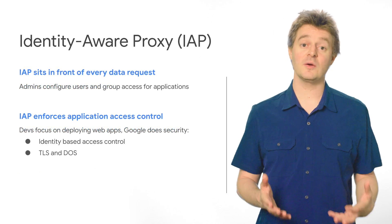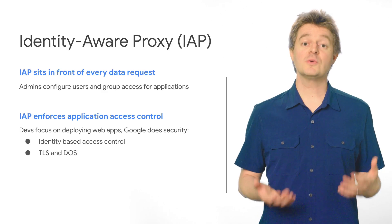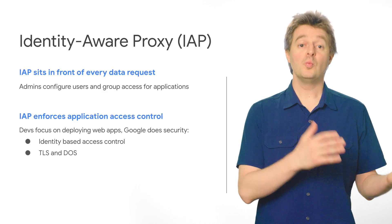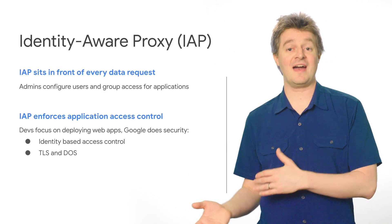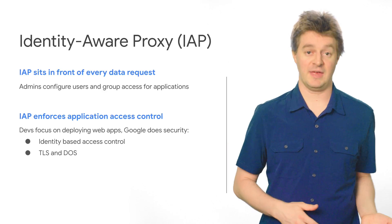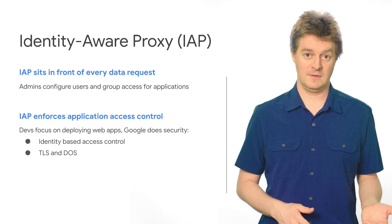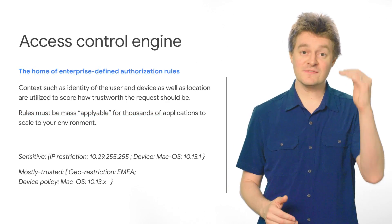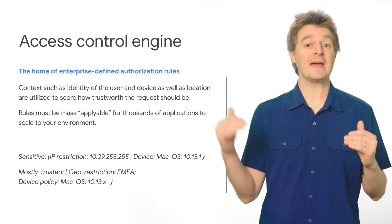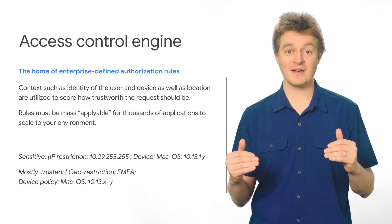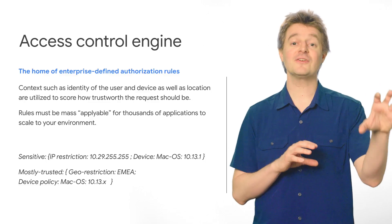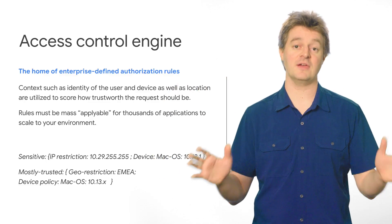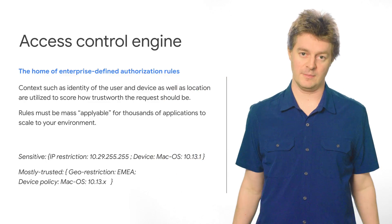Then there's the identity-aware proxy, which allows admins to configure which people have access to which applications. And finally, the control engine, which contains a list of these items matched up with buckets of access that allow for easy scale to thousands of applications in your environment.